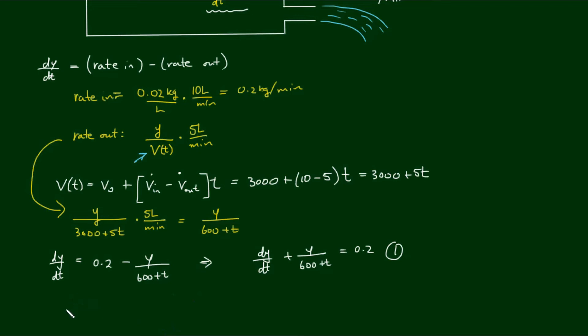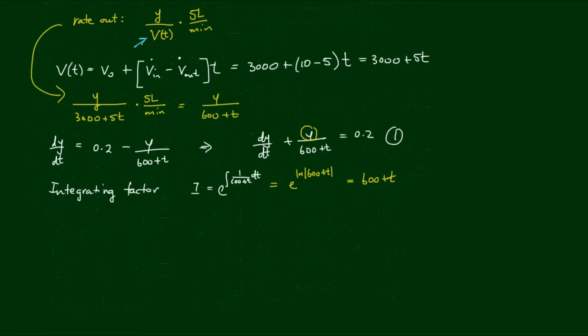So equation 1 is a linear first order differential equation which can be solved by the use of an integrating factor. And the integrating factor, let's call it I, is equal to e to the integral of 1 on 600 plus t with respect to t. So it's the integral of the coefficient term in front of the y term here. So the integrating factor equals e to the log of 600 plus t, which simply reduces to 600 plus t.